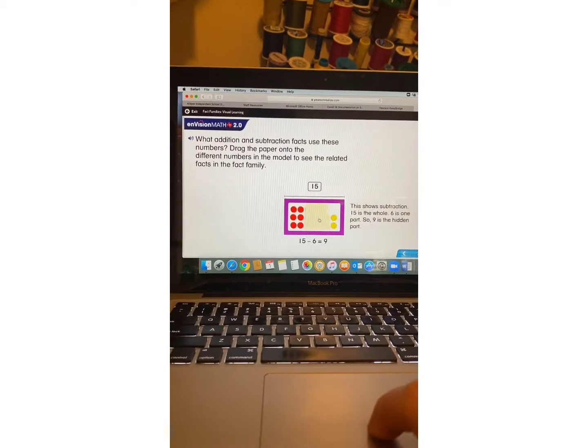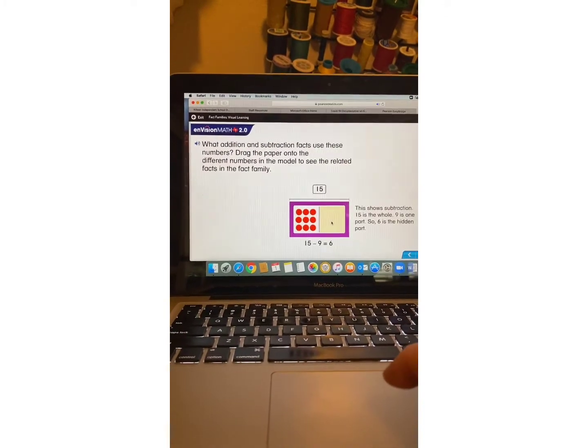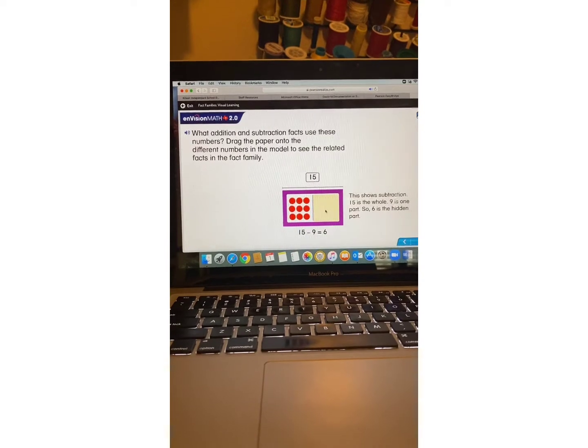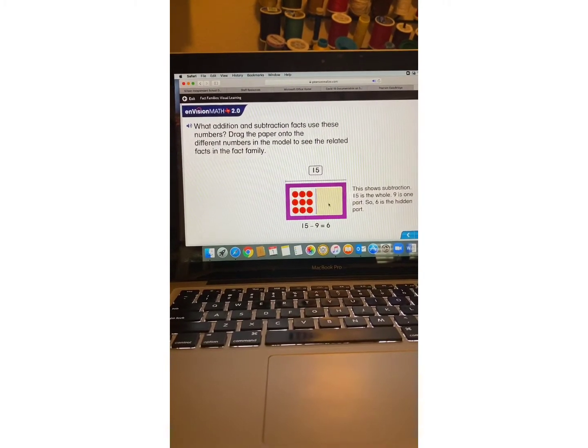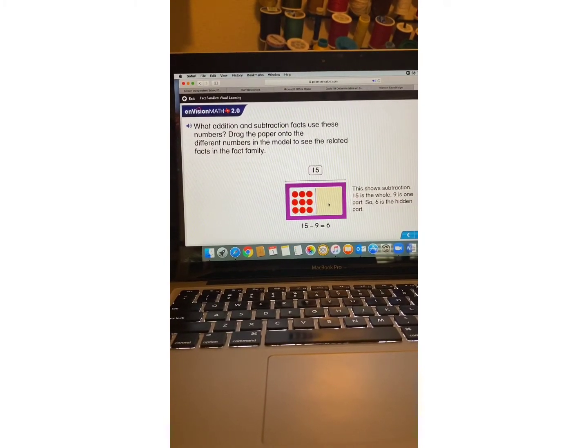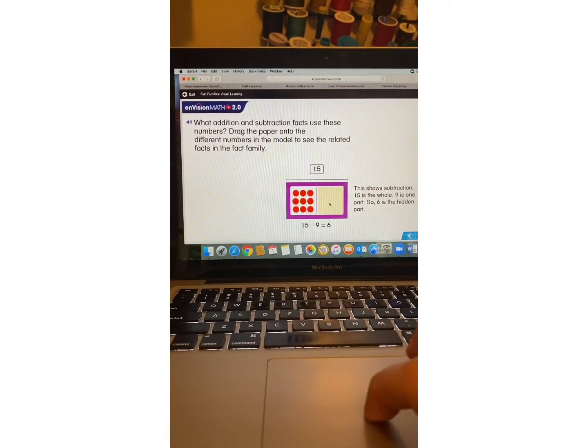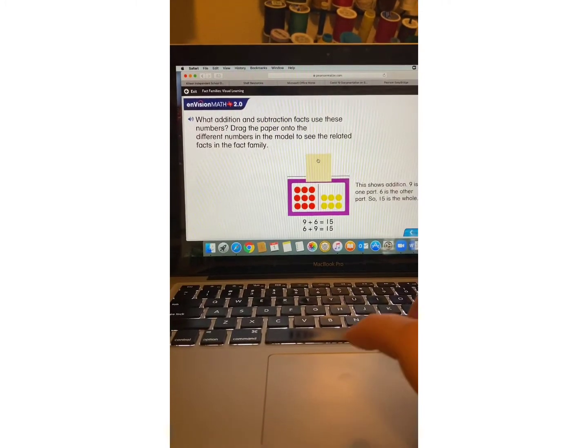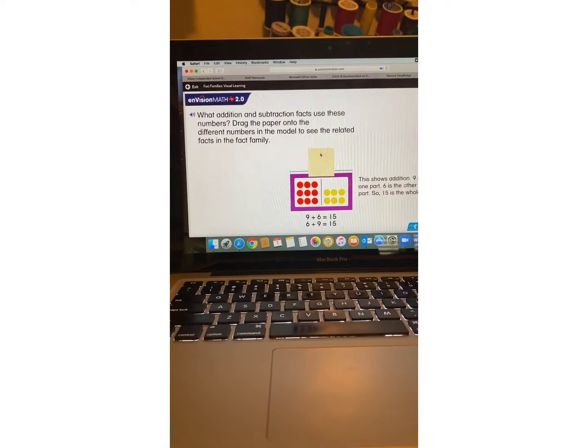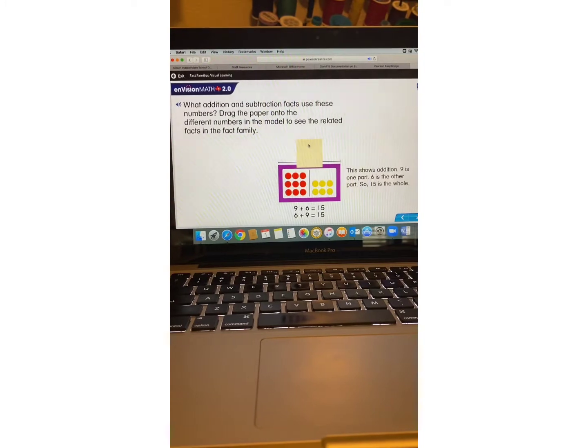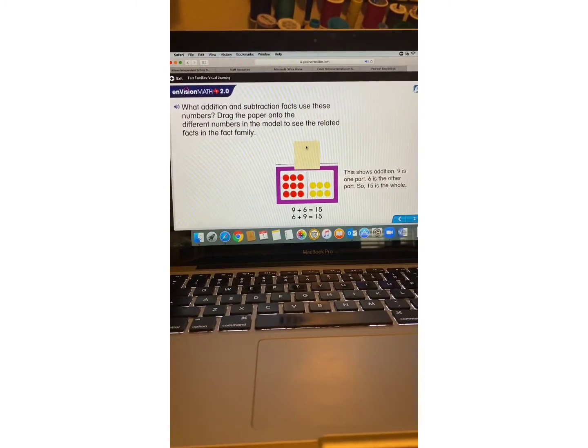Now if I hide the six, here we go. This shows subtraction. 15 is the whole. 9 is one part. So 6 is the hidden part. Now if I move the paper to the 15. This shows addition. 9 is one part. 6 is the other part. So 15 is the whole.